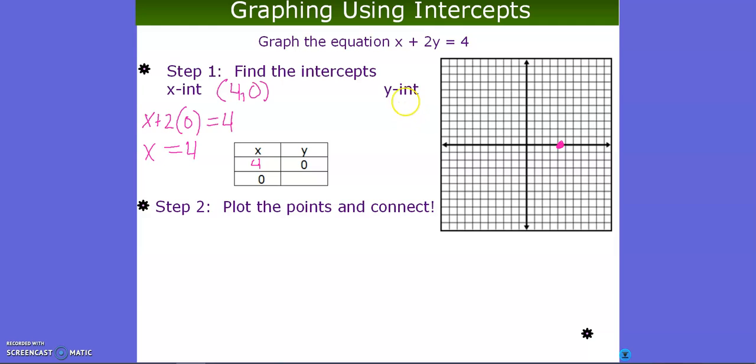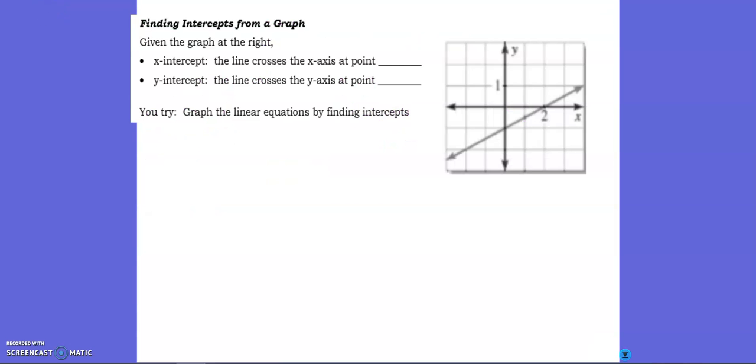And for my y intercept, I replace the x with 0. Therefore, y equals 2. So my y intercept is at 0 comma 2. And that's here. And then we connect our dots, extend with arrows on either side, and we have a graph. So only needed two points to graph like this.